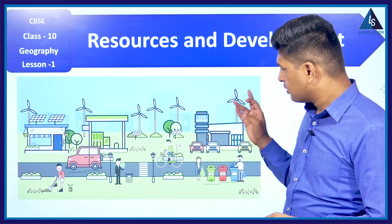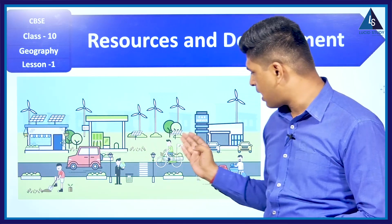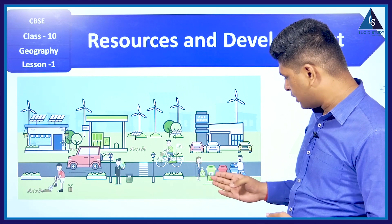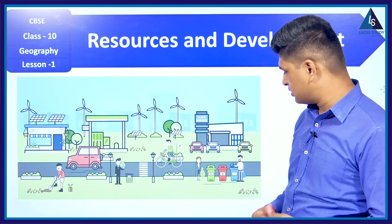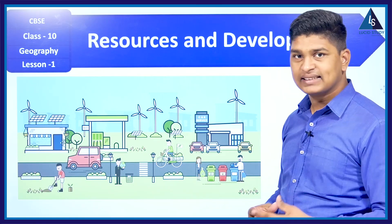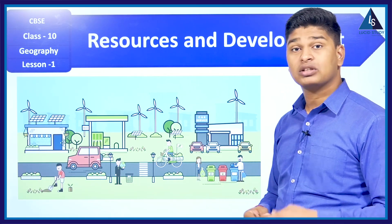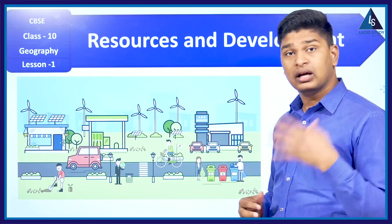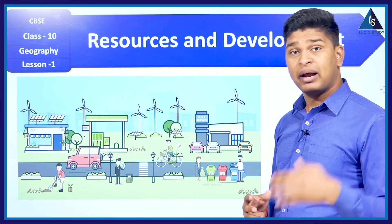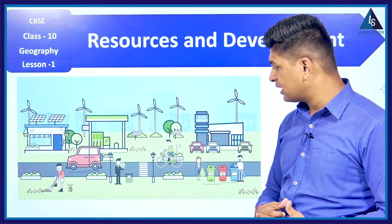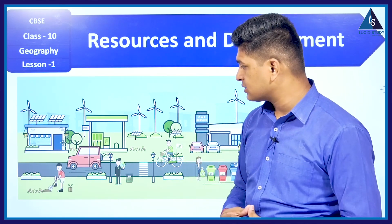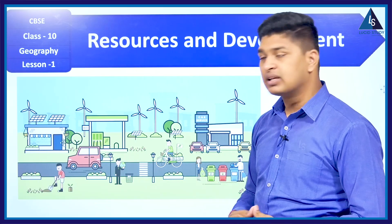Before going into the chapter, let's look at this picture. There are windmills, solar panels, a car service showroom, and three different types of dustbins — green for recyclable waste, red for radioactive waste, and blue for non-degradable waste. Some people are maintaining a healthy lifestyle using cycles as a means of transport, a person is watering plants, and cars are running on electricity.